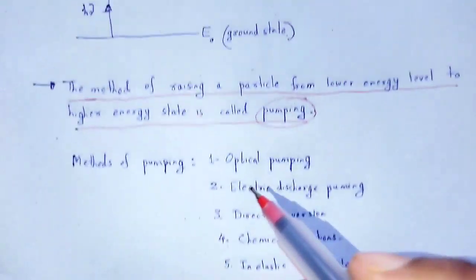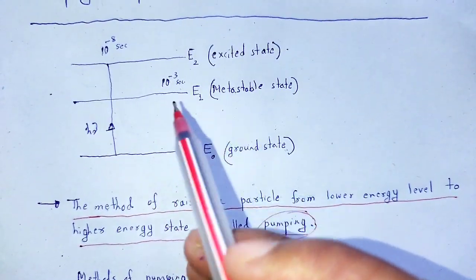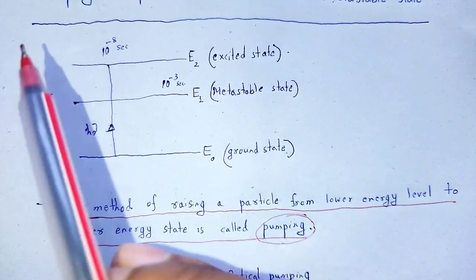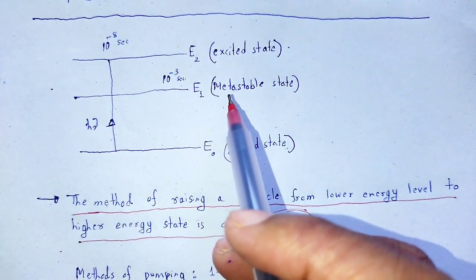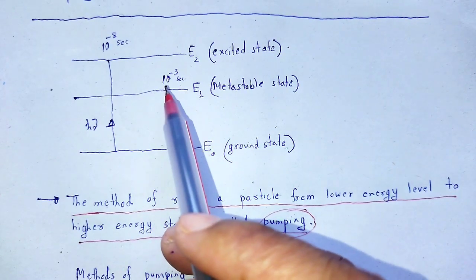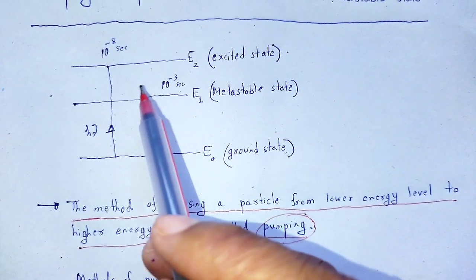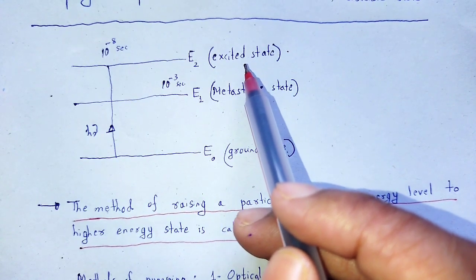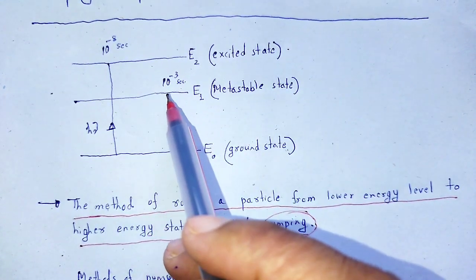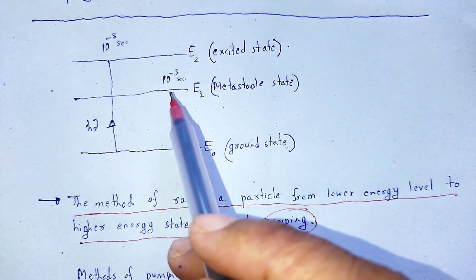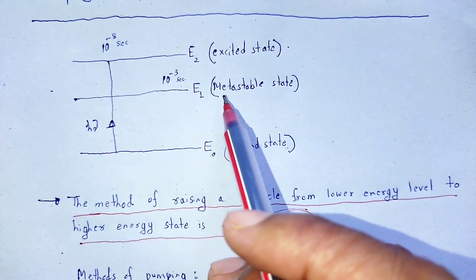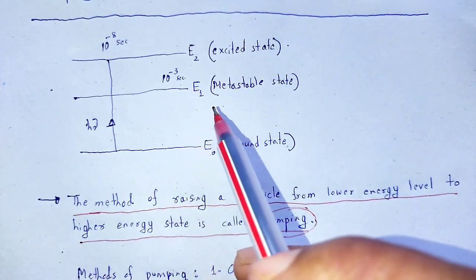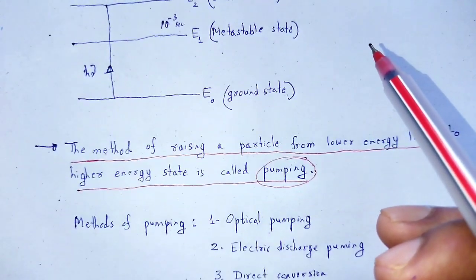Why does population inversion occur? At the excited state, atoms stay for about 10 to the power minus 8 seconds, while at the metastable state they stay for 10 to the power minus 3 seconds, which is much more than the excited state. Therefore, a huge number of atoms stay at the metastable state in comparison to the ground state, and this phenomenon is known as population inversion.